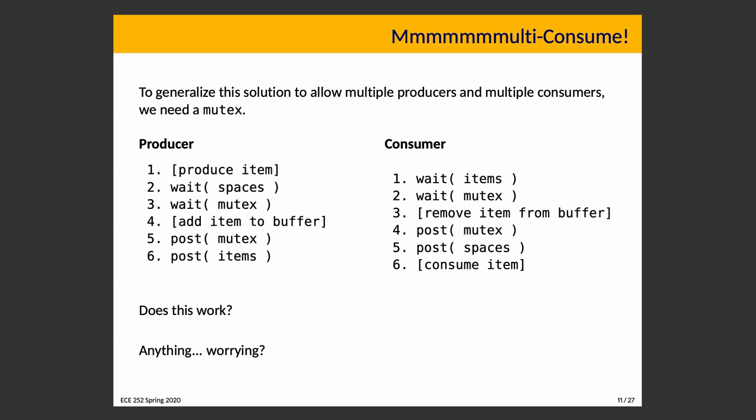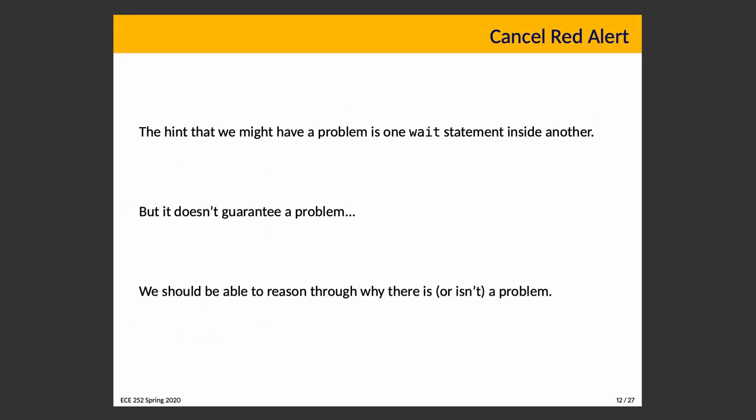We have to choose an initial value for mutex — it's one. Does this do what we expect? Do you see anything worrying? Yes — we have nested waits. Both the producer and consumer have nested waits: the producer's are on lines two and three, and the consumer's are on lines one and two. Those are concerning and should set off alarm bells — this is potentially a problem.